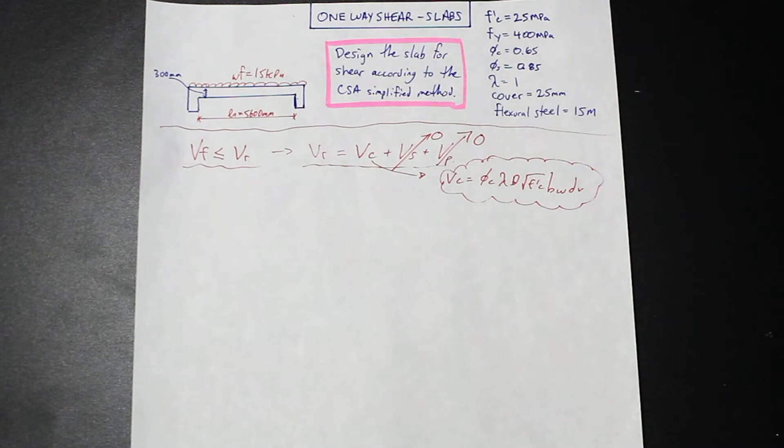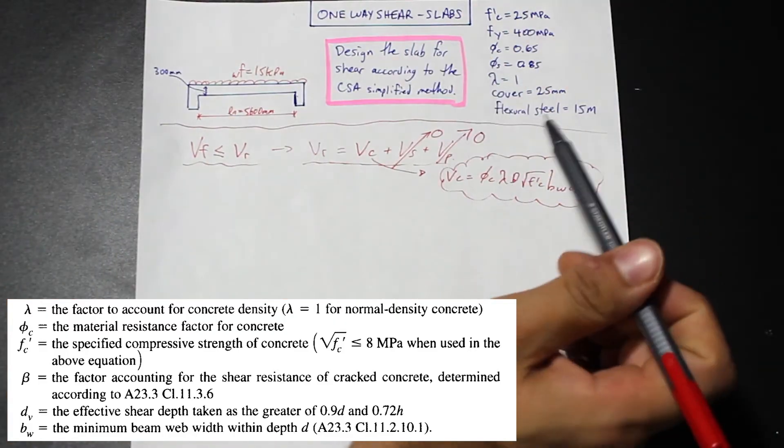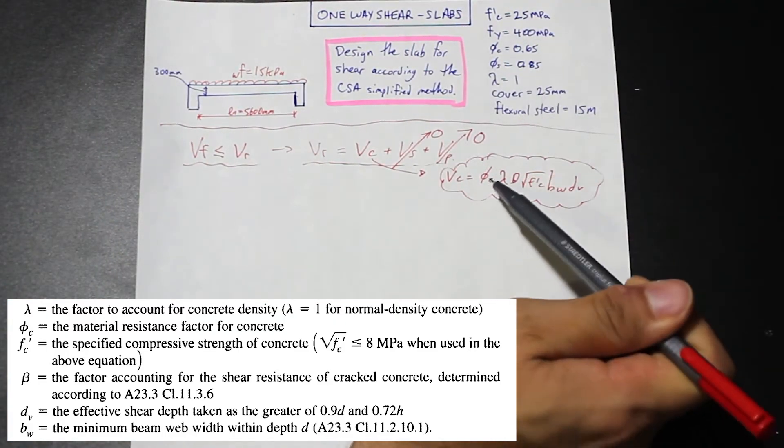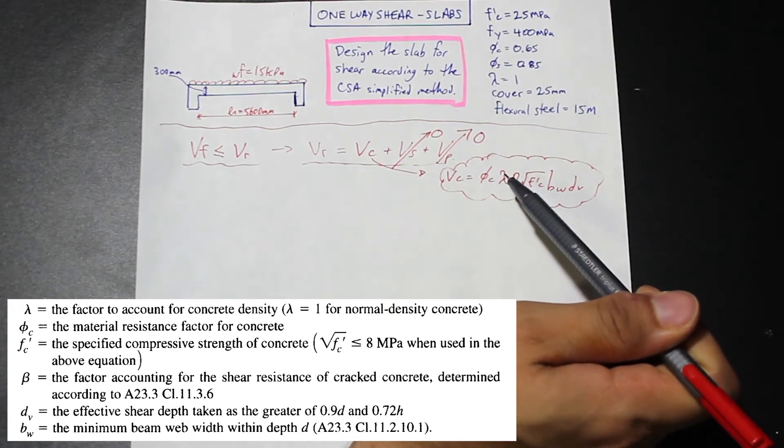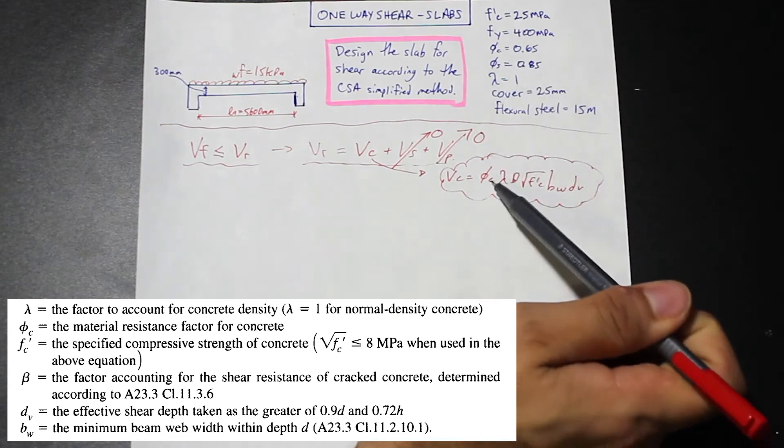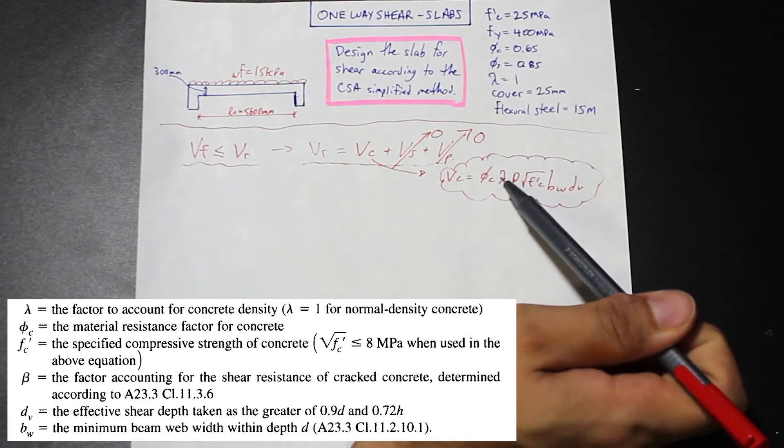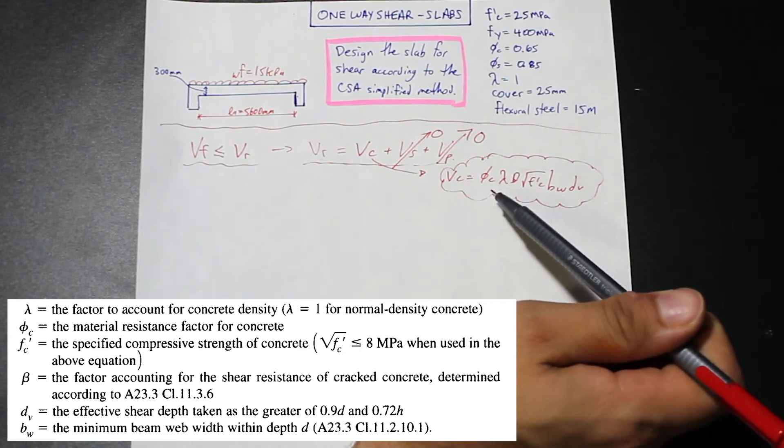Let's take a look at what this formula means, and we'll go through all the variables. Phi c is the material resistance factor for concrete. We're given that in the formula. That's a standard in the code. Lambda is a factor to account for concrete density. If we have a standard normal density concrete, we're going to use a 1 for this, which is almost always.